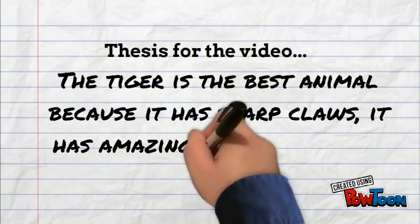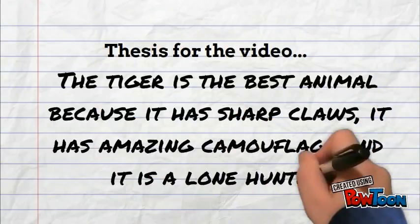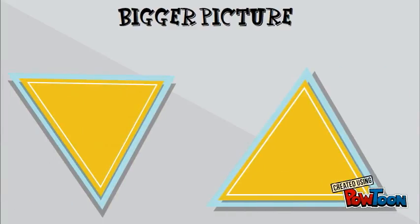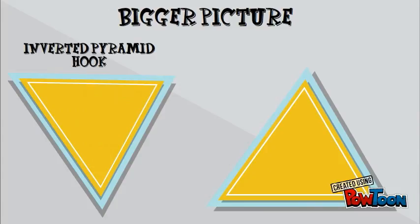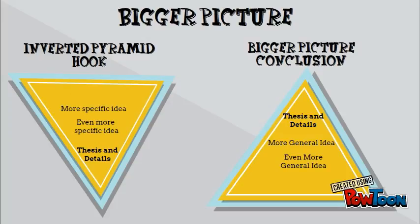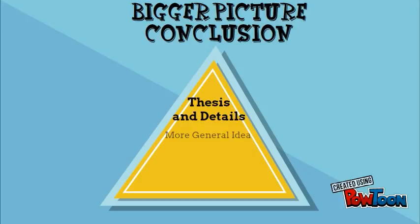There are three different types that we will be discussing today. For all of these three examples, I will be using the thesis statement from the example above. The first of these three different types of conclusions is the bigger picture. This is like a reverse inverted pyramid hook. With this type, you restate your thesis and your details, but then you pull it back to more general details about the topic.